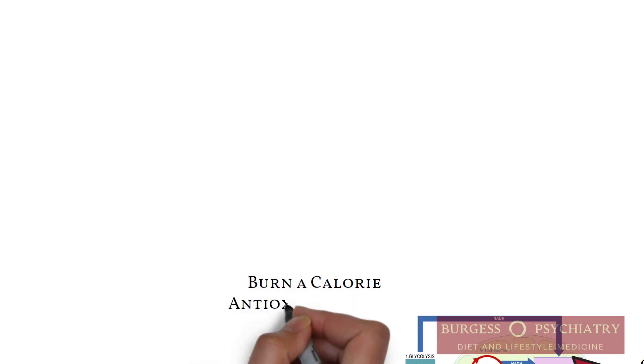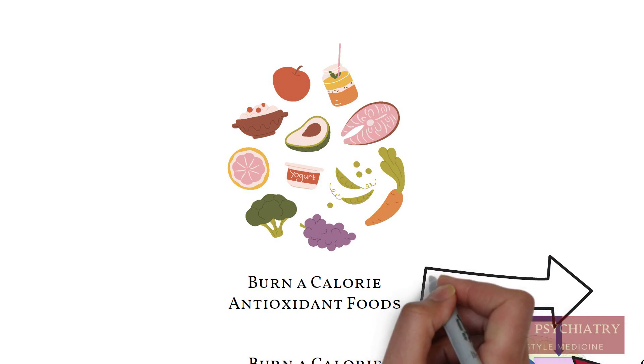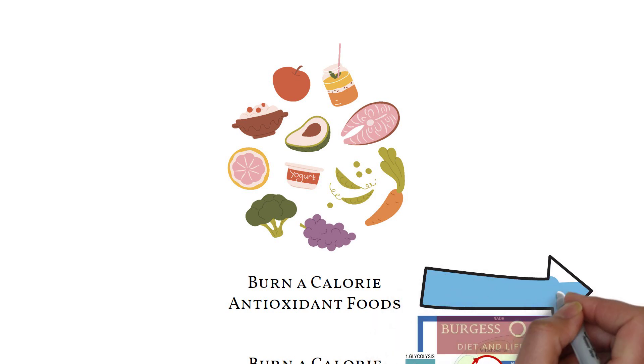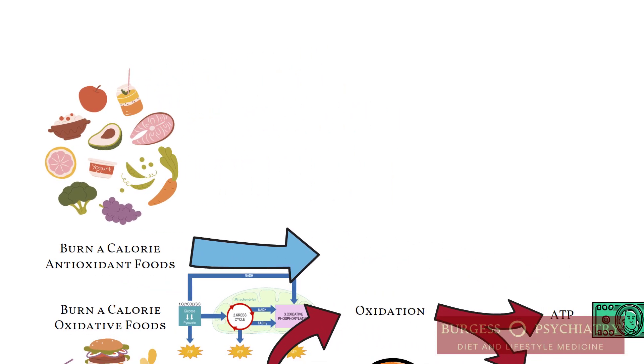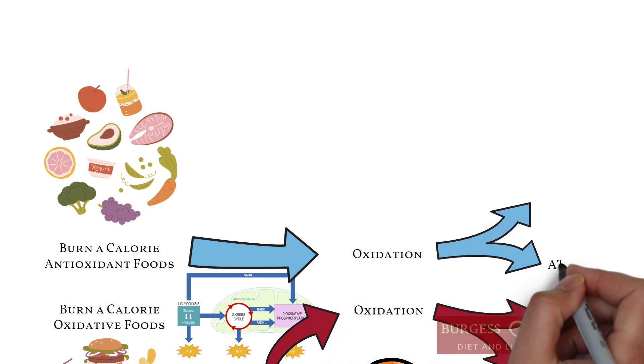If you eat calories that are packed with antioxidants, then a different cycle happens. Anytime you burn a calorie, whether it's thinking, feeling, moving, a calorie's being burned, it's an oxidative process. You're going to end up with an ATP and a reactive oxygen species.